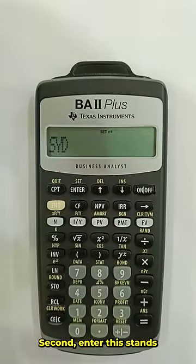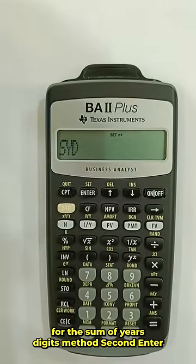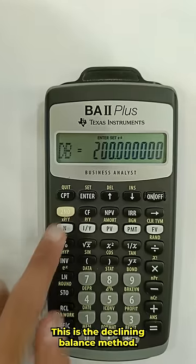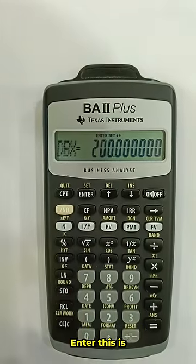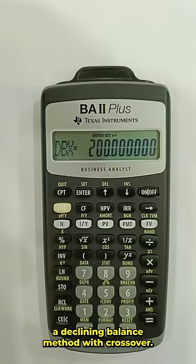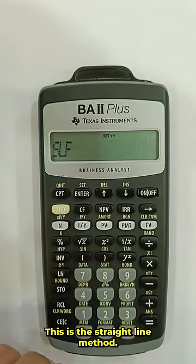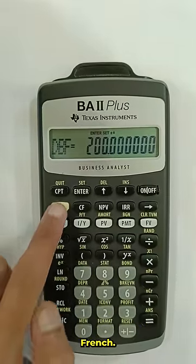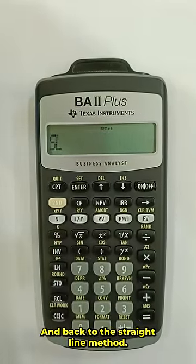2nd, enter, this stands for the sum of years digits method. 2nd, enter, this is the declining balance method. Again 2nd, enter, this is the declining balance method with crossover. This is the straight line method French. This is the declining balance method French and back to the straight line method.